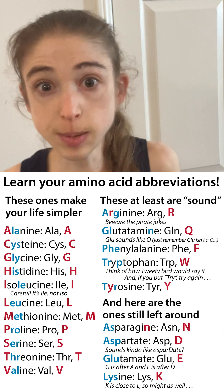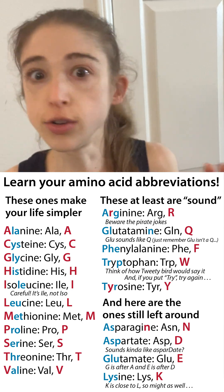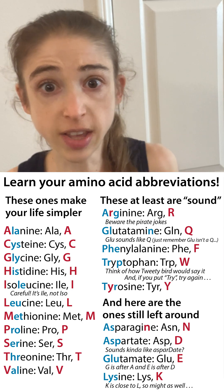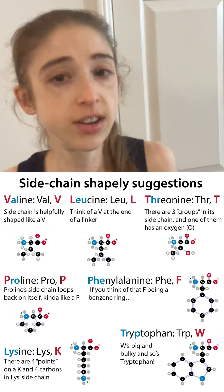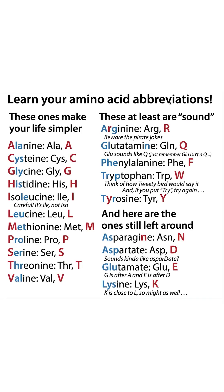As a biochemist, my biggest piece of advice: learn your amino acid abbreviations. Here's some help. Thankfully, a lot of these amino acids make life simple and it's just the first letter. The only thing to keep an eye out for is isoleucine — its abbreviation is ILE and not ISO.